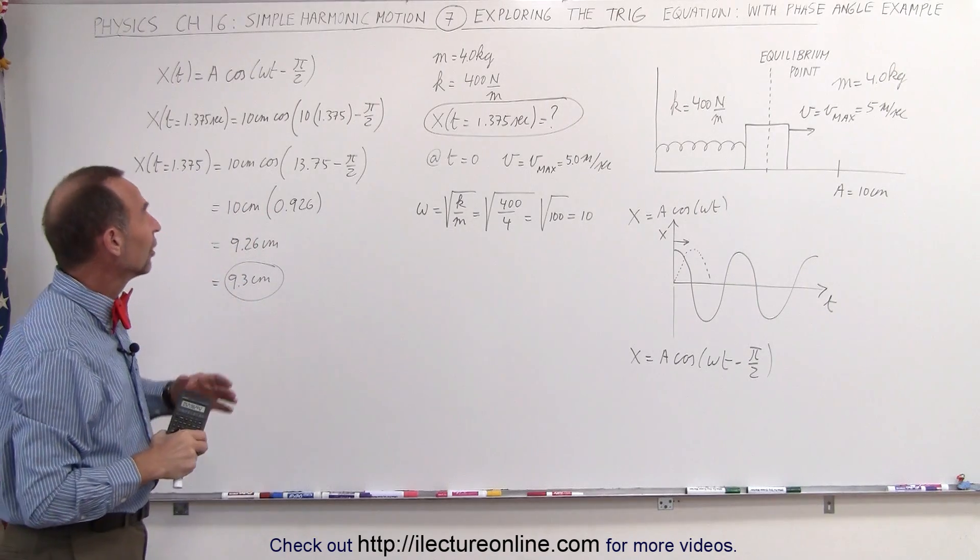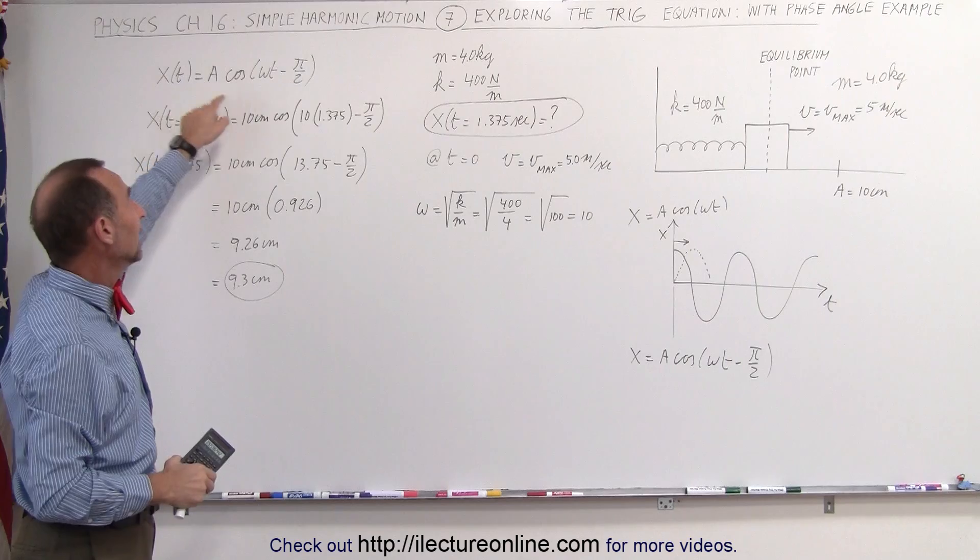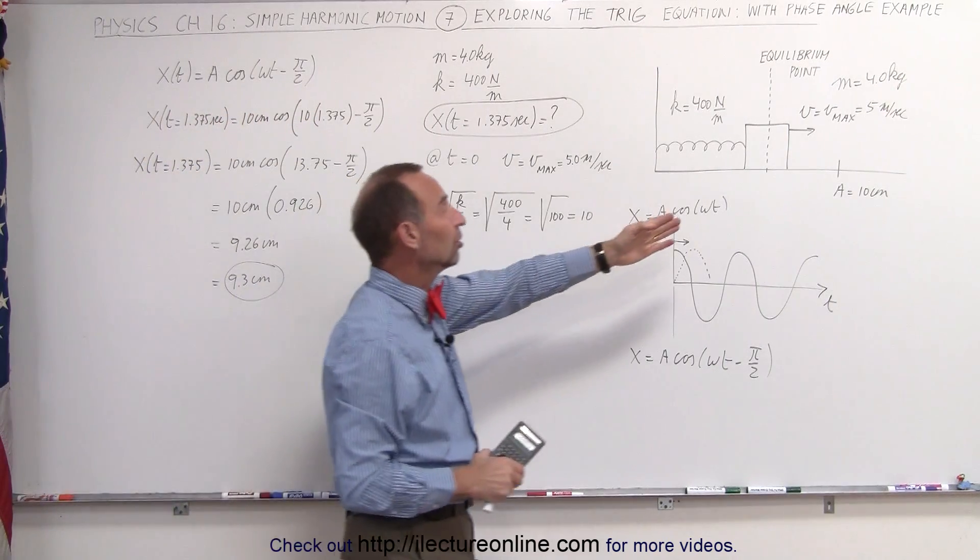So that's why you always have to be careful what equation you use to solve for position, velocity and time. If it requires a phase angle, you can usually figure that out by the initial conditions given.